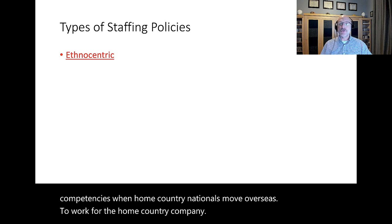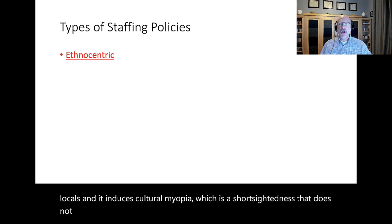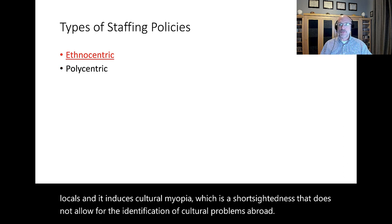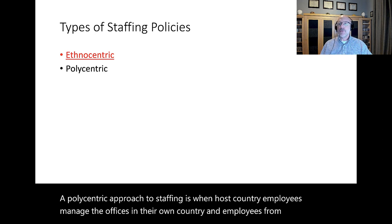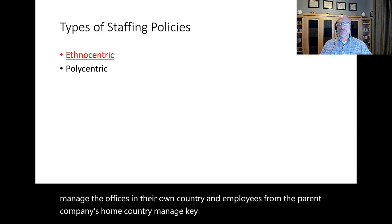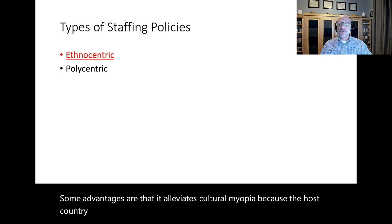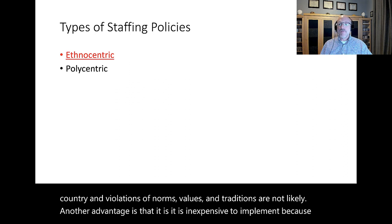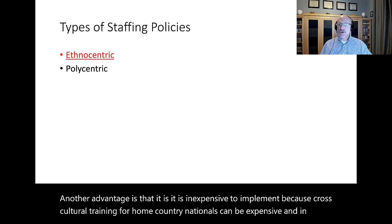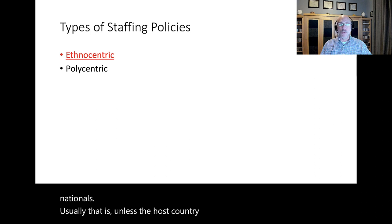Disadvantages of the ethnocentric approach include the fact that it can produce resentment amongst locals and it induces cultural myopia — a short-sightedness that does not allow for the identification of cultural problems abroad. A polycentric approach is when host country employees manage the offices in their own country, and employees from the parent company's home country manage key positions at headquarters. Advantages include that it alleviates cultural myopia, since host country employees are intimately familiar with their culture, and it is inexpensive to implement because cross-cultural training for home country nationals can be expensive and host country nationals tend to get paid less.